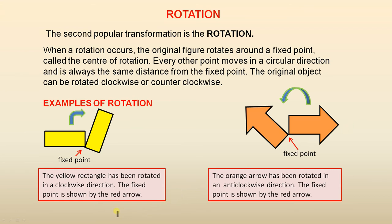The yellow rectangle has been rotated in a clockwise direction. The fixed point is shown by the red arrow — this point here, right on the corner, is the fixed point and it is the center of rotation. Every other point rotates around that point, and in this particular example, the rotation is in a clockwise direction.